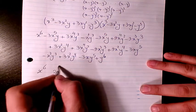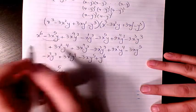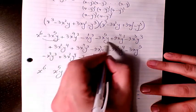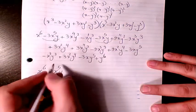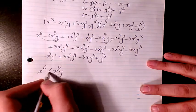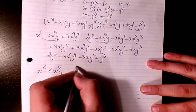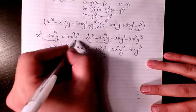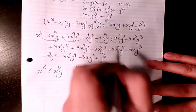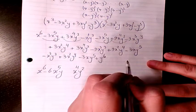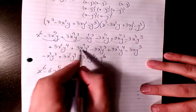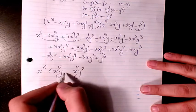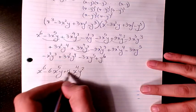Next is x to the power of 5y. We have negative 3 and negative 3, so it will be negative 6. Then I have x to the power of 4y squared: 3 plus 9 gives 12, plus 3 more gives 15.